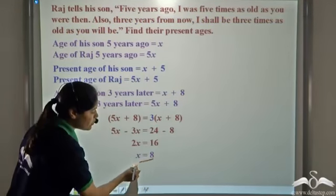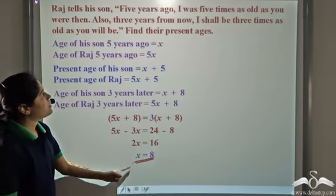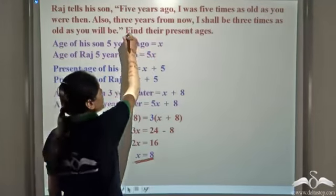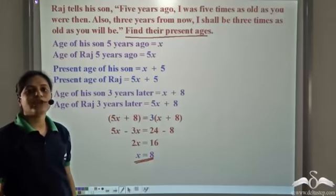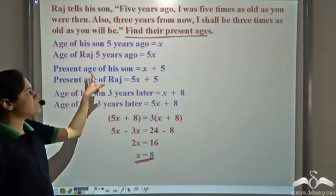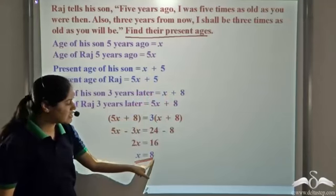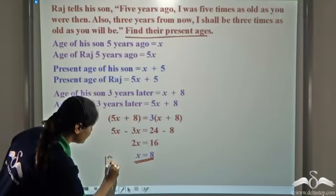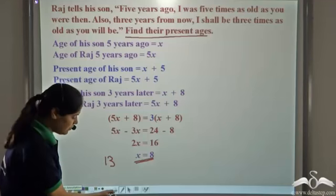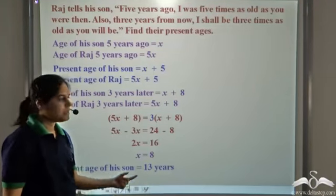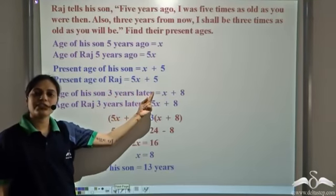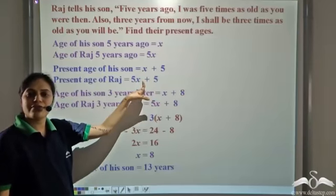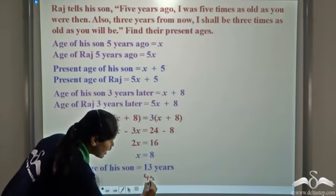So x is equal to eight. But x is the age of his son five years ago, not the present age. The question asks for their present ages. Present age of his son is x plus five, that is eight plus five, which is thirteen years. Present age of Raj is five x plus five, that is five into eight plus five, which is forty plus five equals forty-five years.